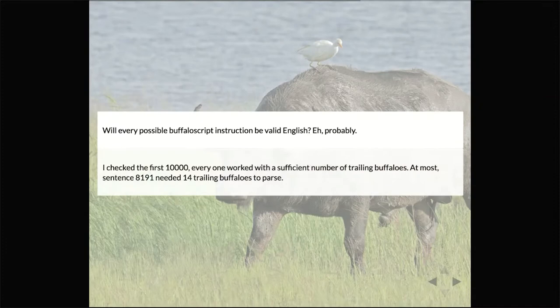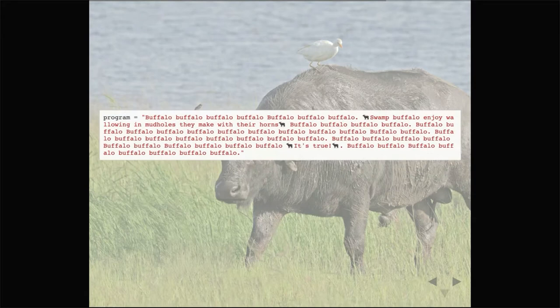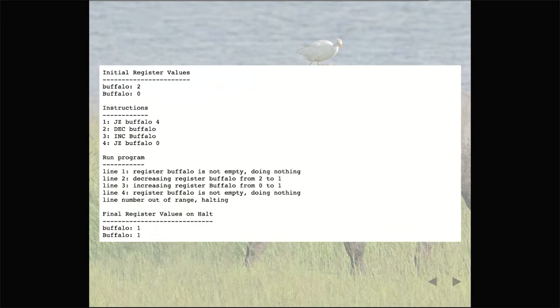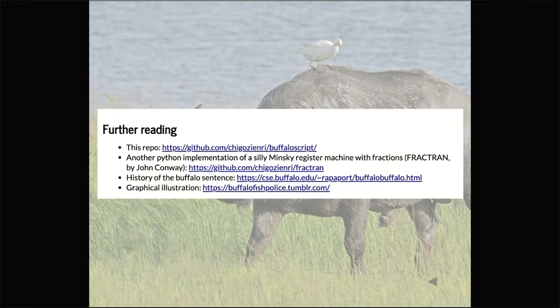Here are the instructions. Have I proved that every possible instruction will be valid English? No, I haven't, because I can't really be bothered. But I do have a proof by intimidation: I checked the first 10,000 possible Buffalo sentences, and as long as you have a sufficient number of trailing lowercase Buffaloes, it will be valid English. Here's the program we were trying to implement — I've escaped comments with a Buffalo emoji, obviously. The style guide strongly encourages that you don't use comments for any useful state information, but rather just incidental asides. Does it work? Yes — using the program to convert to the program machine and run it, that just moves numbers from one register to another. Because it is a Minsky register machine under the hood, it is Turing complete. And that's my talk.